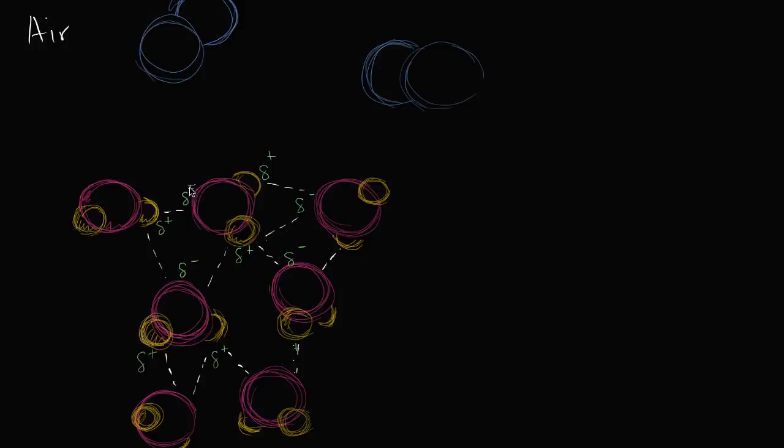So you have a partially negative charge at this end and partially positive ends at this end. And that attraction between the partially positive ends and the partially negative ends, that's what gives water all sorts of neat properties. Those are the hydrogen bonds that give water all sorts of neat properties and keep it in its liquid state at just standard temperature and pressure.